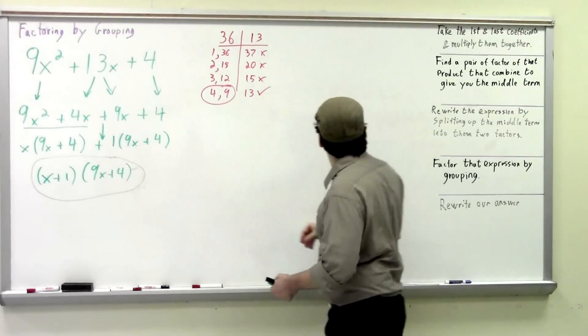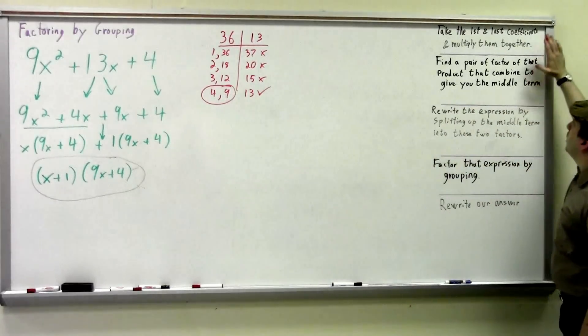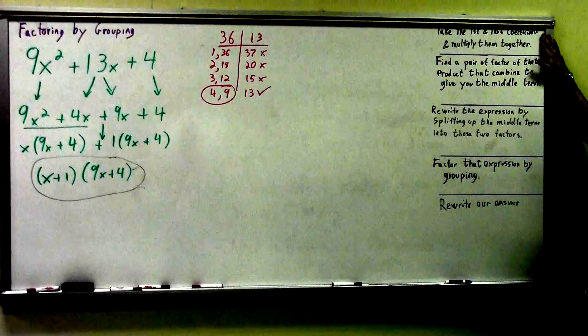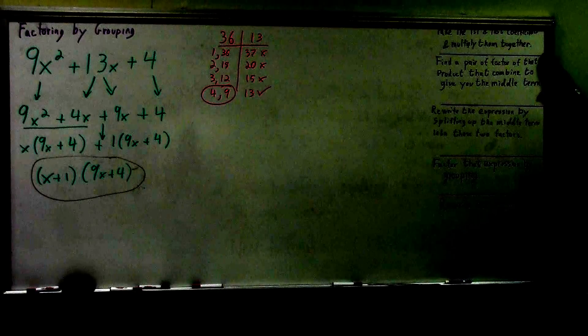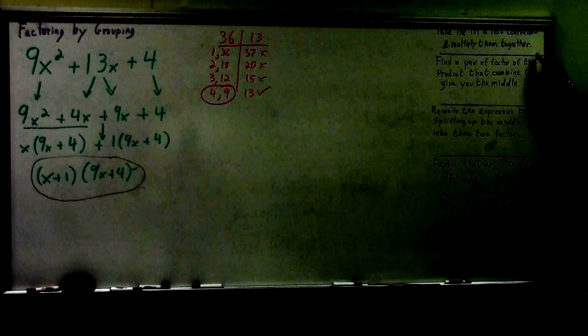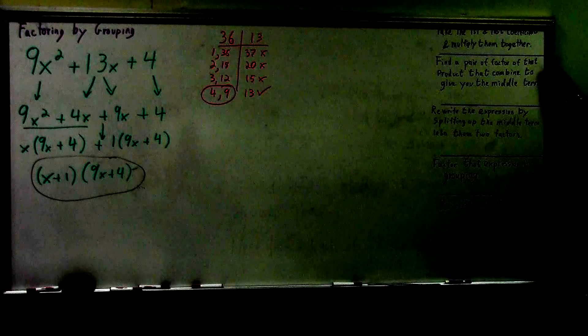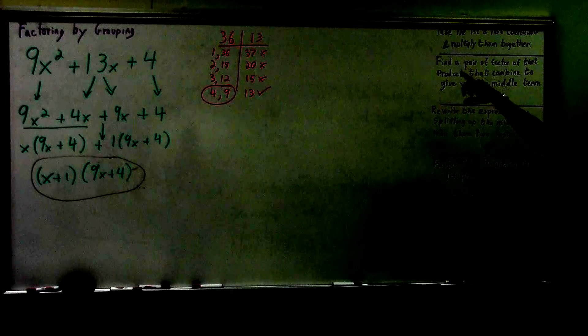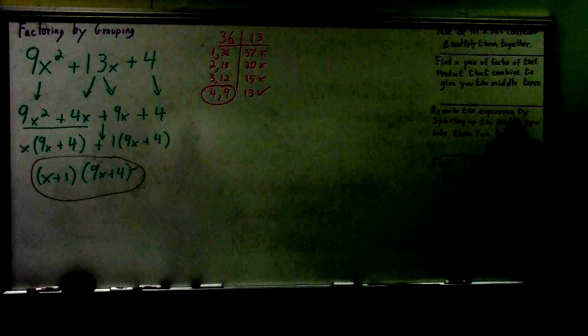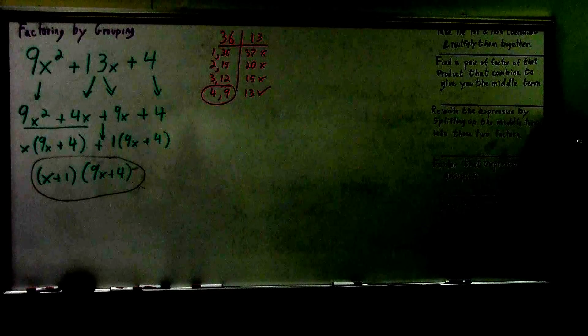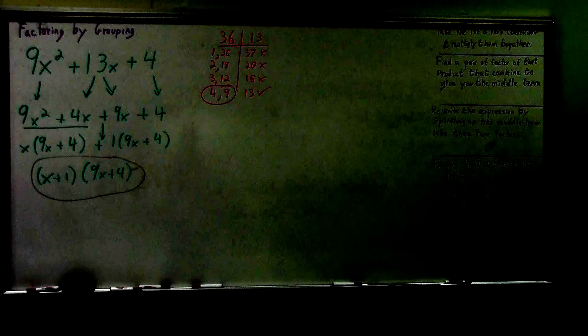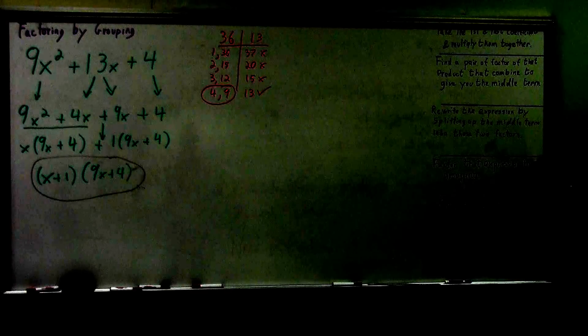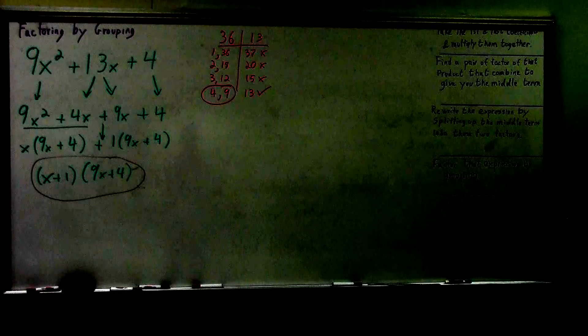So remember, you're going to start off taking the first and last coefficients and multiplying them together. Your second step is going to be to find a pair of factors of that product that combine to give you the middle term. So you're going to go through and make a list. The third step is to rewrite the expression by splitting out the middle term. Then you want to factor that by grouping and rewrite your answer.